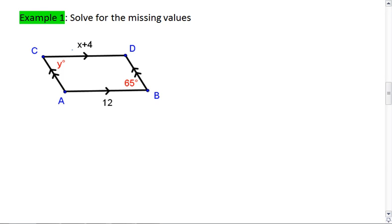Alright, let's look at the X first. These are opposite sides, which tells us that CD is congruent to AB. Thus, X plus 4 must equal 12. So X equals 8.